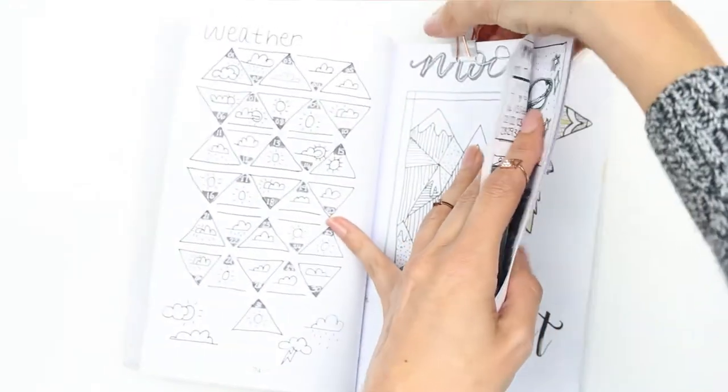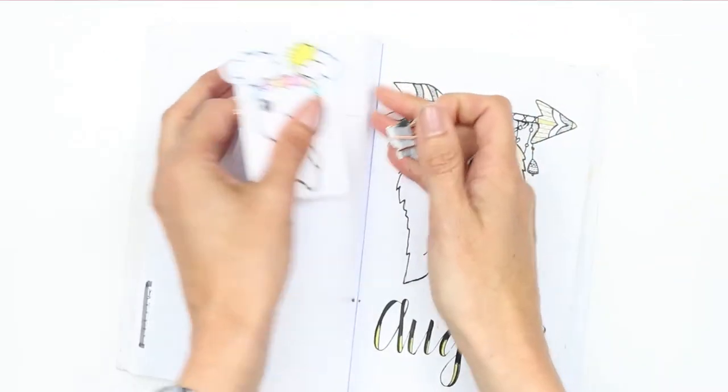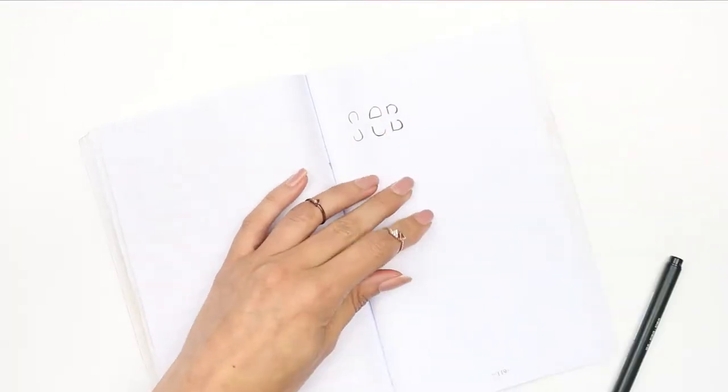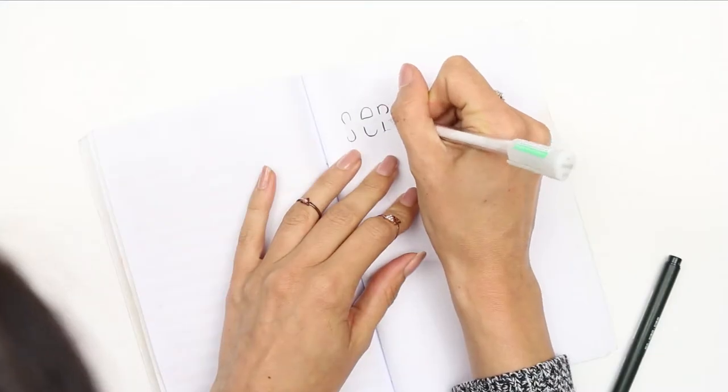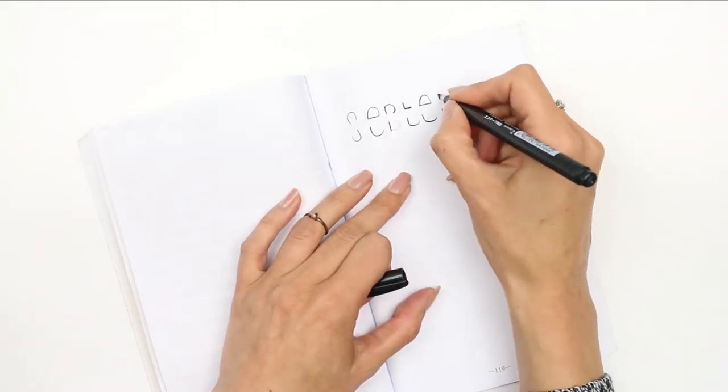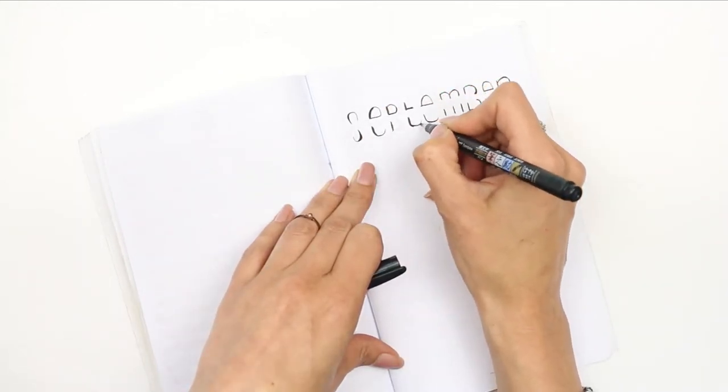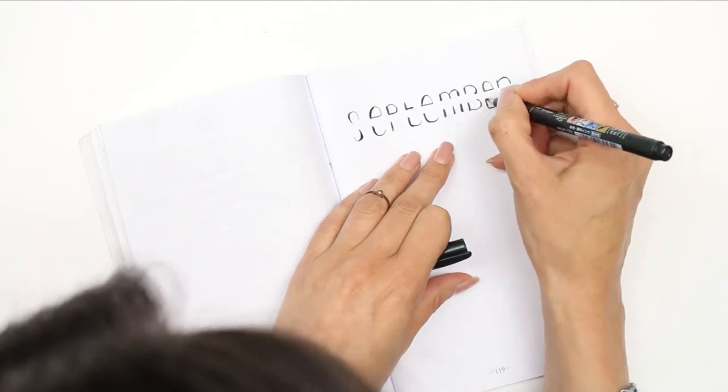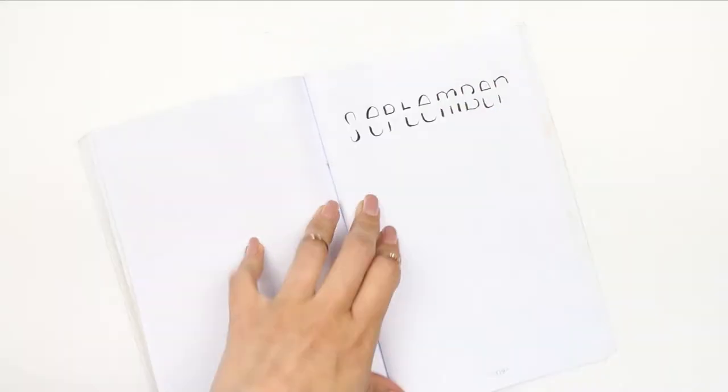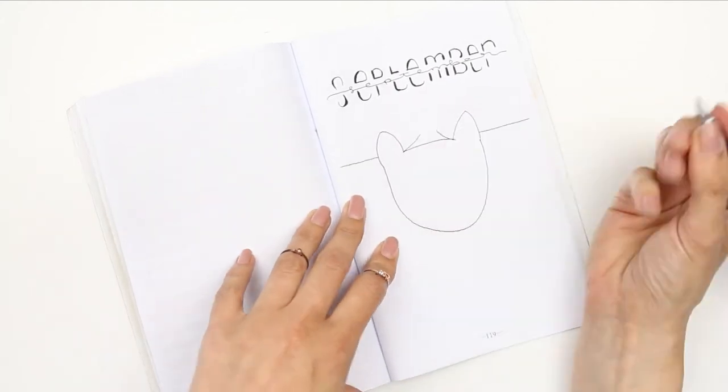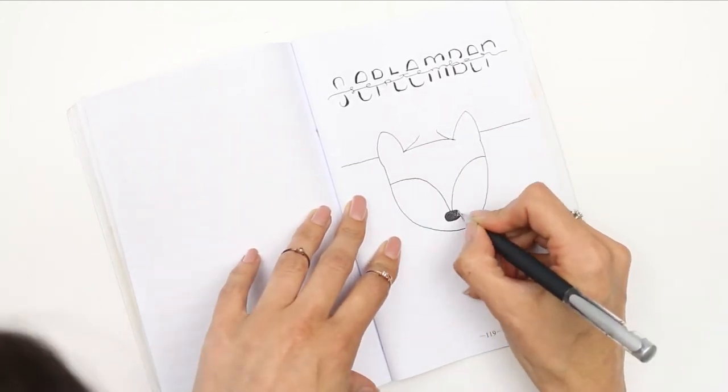For this month's spread I wanted to do a quick bullet journal because a lot of people feel that they don't have time for a bullet journal or can't draw to have a bullet journal. So I'm just going to show you a really quick way to set it up so you can still use it and it's really functional, but you're not spending hours or days creating planner or bullet journal spreads. I'm just starting off with the title which is September.